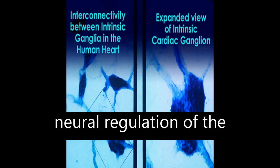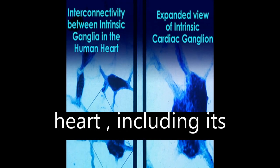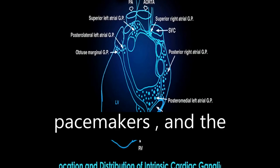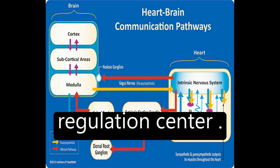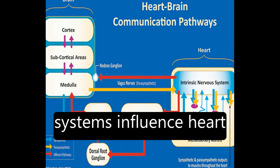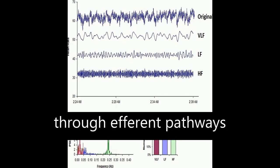This article reviews the neural regulation of the heart, including its anatomy, cardiac cycle, sinoatrial and atrioventricular pacemakers, and the medulla's cardiovascular regulation center. The sympathetic and parasympathetic nervous systems influence heart rate and blood pressure through efferent pathways.